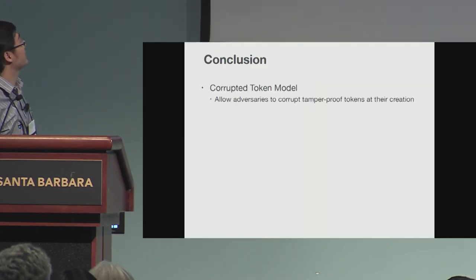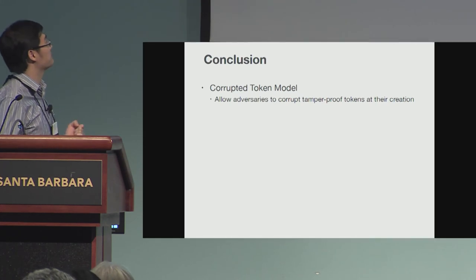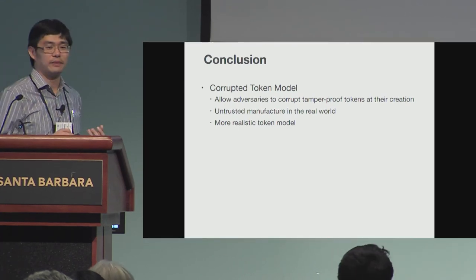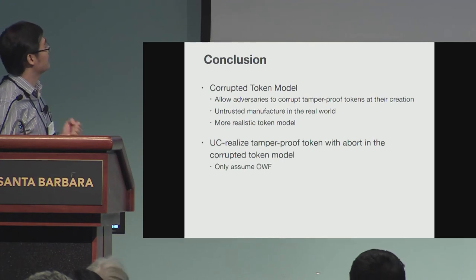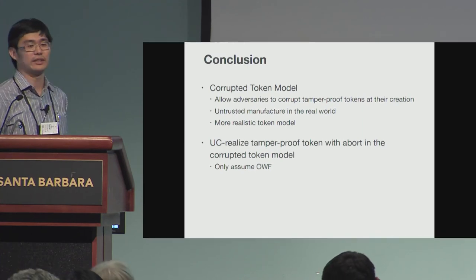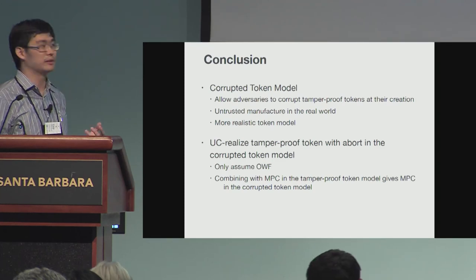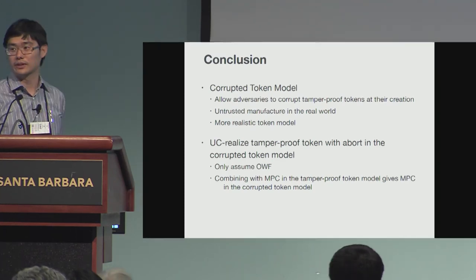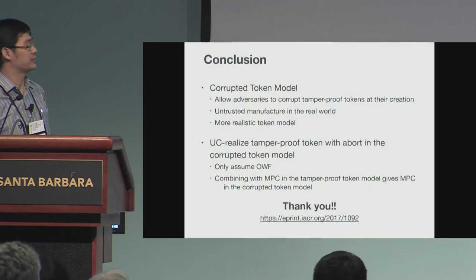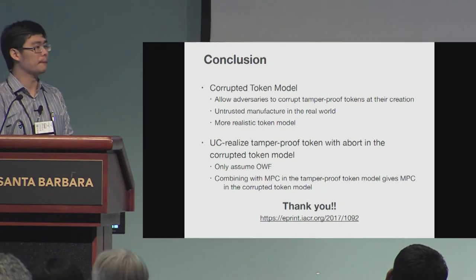As a conclusion, we define a corrupted token model which allows the adversary to corrupt a tamper-proof token at the time of its creation. This better models the untrusted manufacturer in the real world. What we achieved is a protocol that UC realizes the tamper-proof token functionality with abort in the corrupted token model, assuming only one-way functions. We can combine this protocol with any MPC in the tamper-proof token model to give an MPC in the corrupted token model. That's the end of my talk — you can see the paper for more details. Any questions?